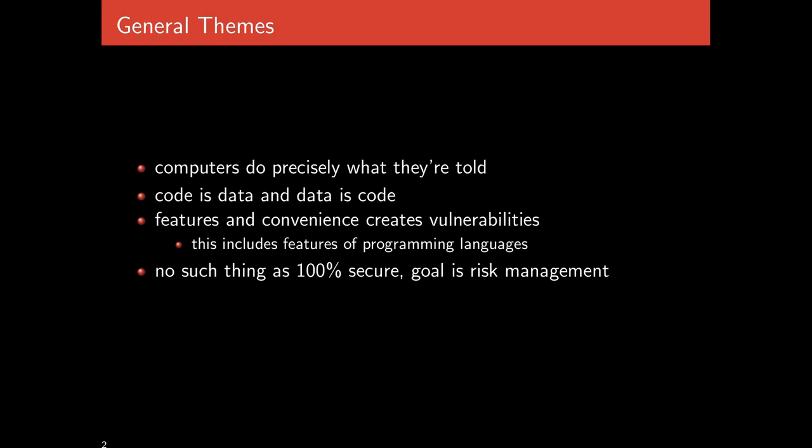A third common theme is that features and convenience create vulnerabilities. This can include features of the programming language itself — for instance, having an eval statement in JavaScript or Python is a convenient feature, but it leads to vulnerabilities. Because if you just run whatever input someone gives you, it could contain bad instructions. Finally, there's no such thing as 100% secure. The goal of security is risk management — balancing risks, investing enough in security to defeat likely attacks, while still having a system you can actually use. By adding utility, we create vulnerabilities.